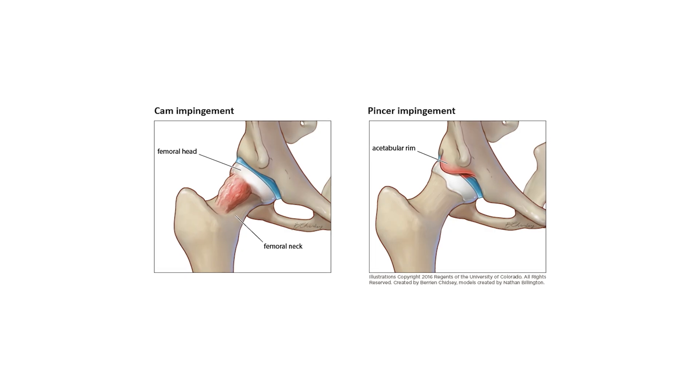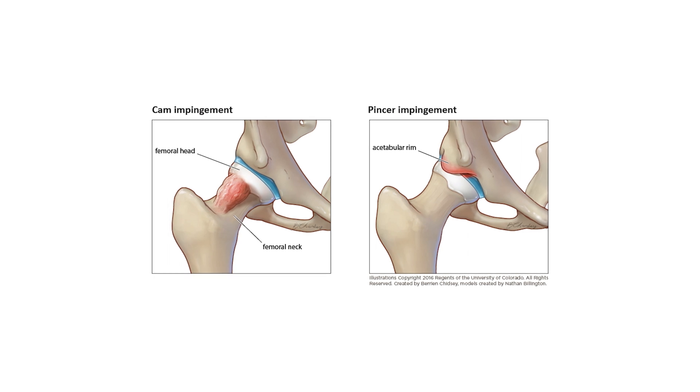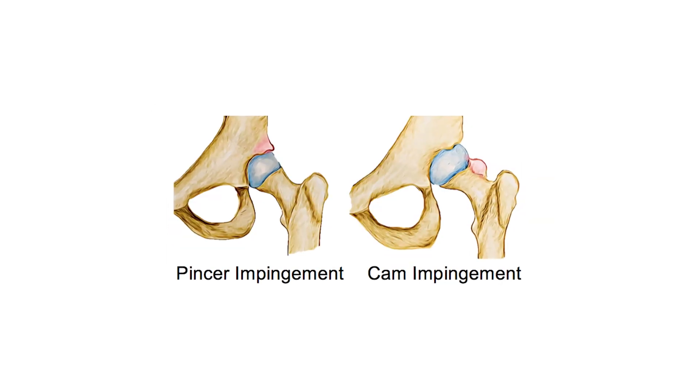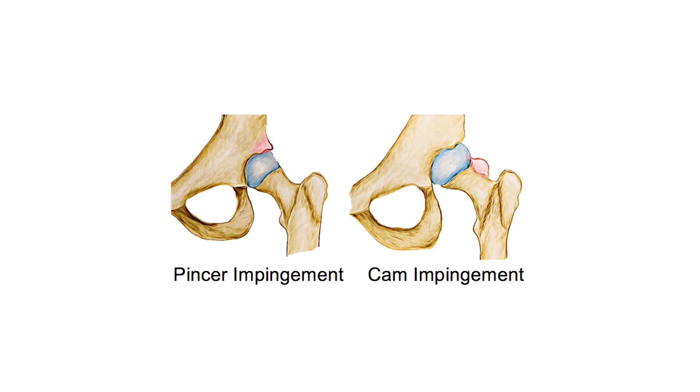Femoral acetabular impingement refers to pain at the front of the hip joint, usually due to some bony overgrowth either from the femur, on the neck of the femur, or at the front of the acetabulum. These are known as CAM and pincer deformities.